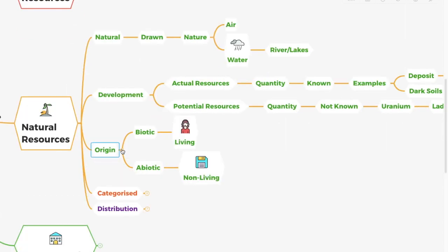Based on their origin, resources are classified as biotic and abiotic. Biotic resources include humans, animals, and plants. Abiotic resources are non-living things such as chairs, stones, and buildings.